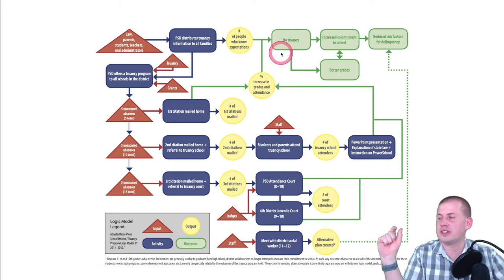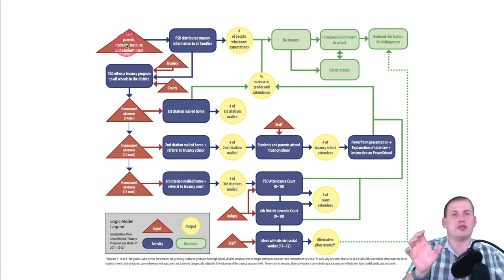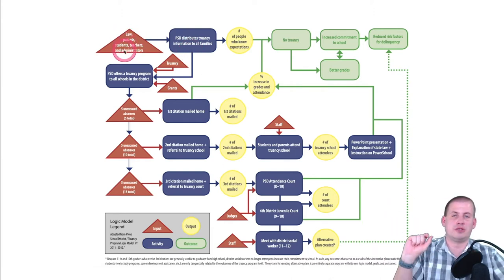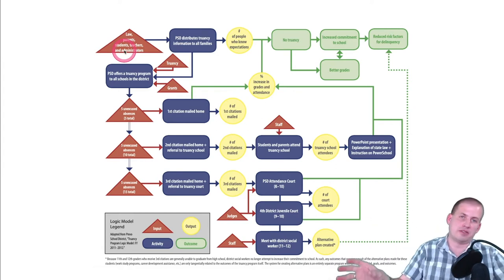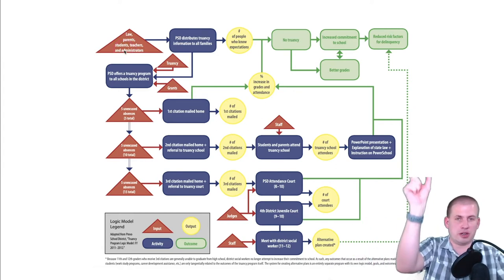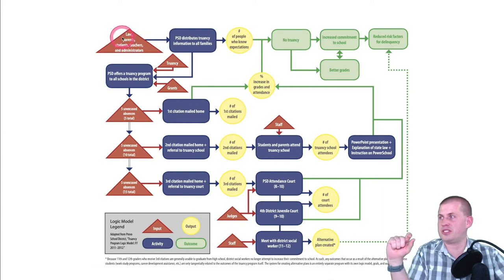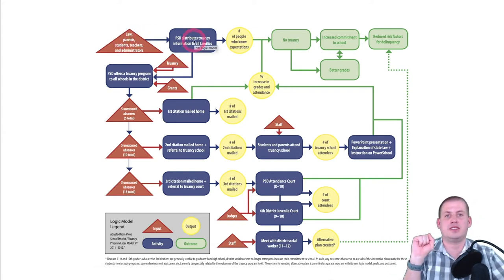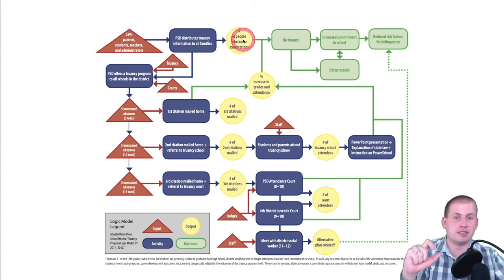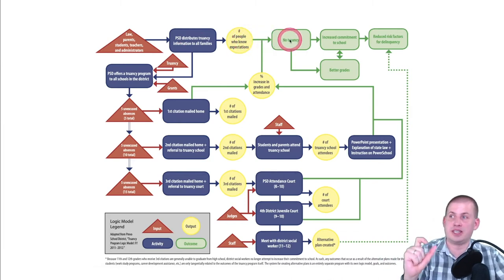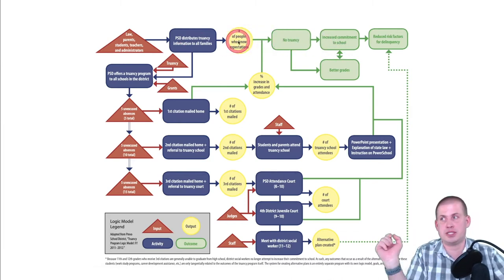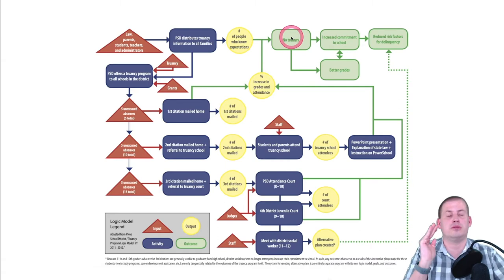When you draw logic models, make sure all of the different components lead into each other. You don't want a huge box of all inputs leading to all activities. Instead, specify that this input feeds into one particular activity, that activity creates a specific output, and that output connects to one of the outcomes and leads to the main social outcome you care about.